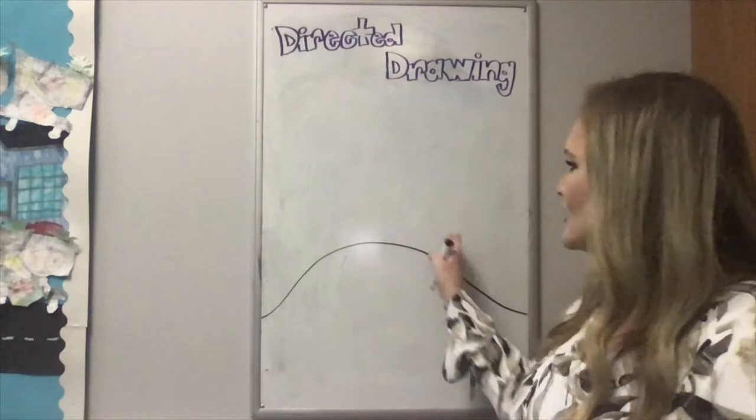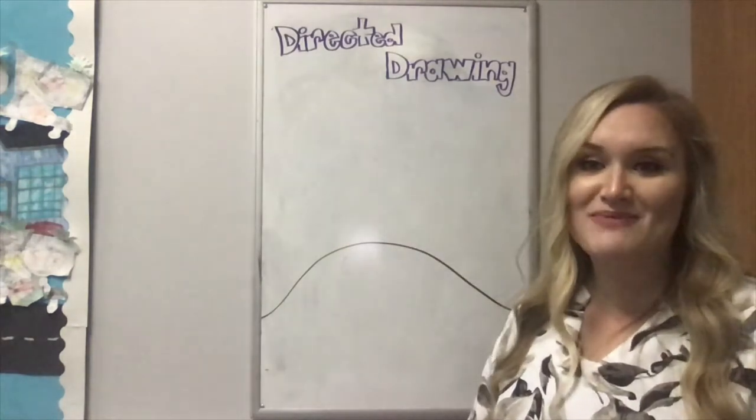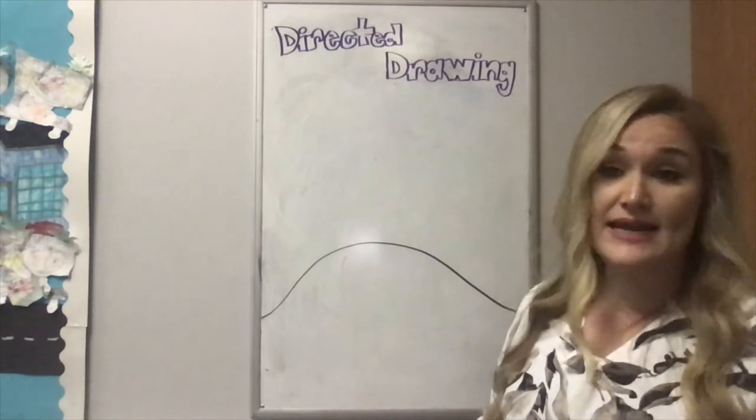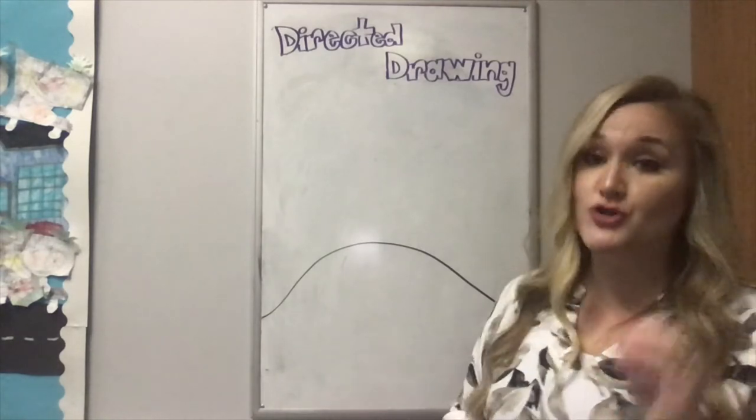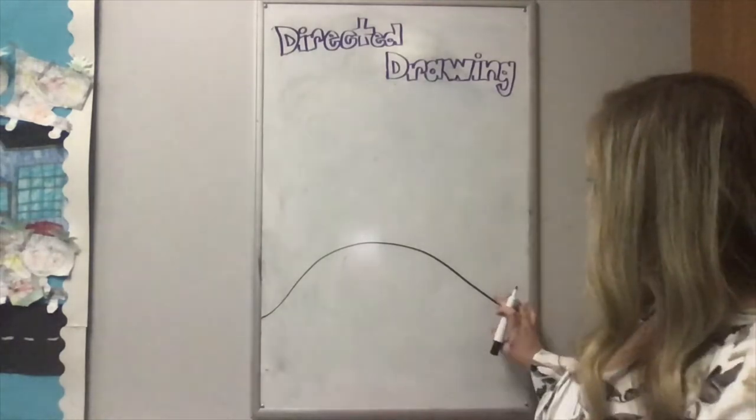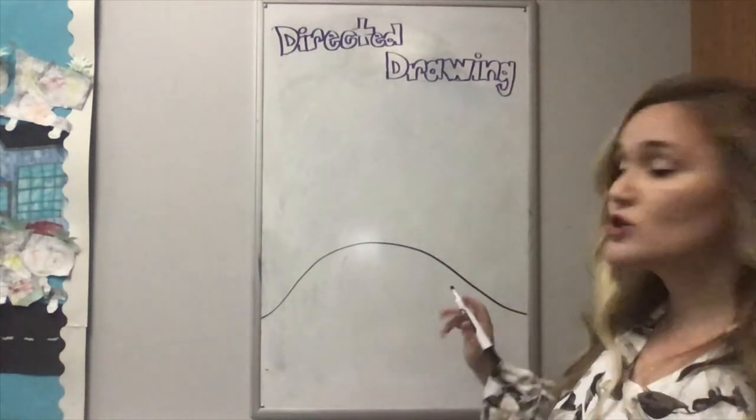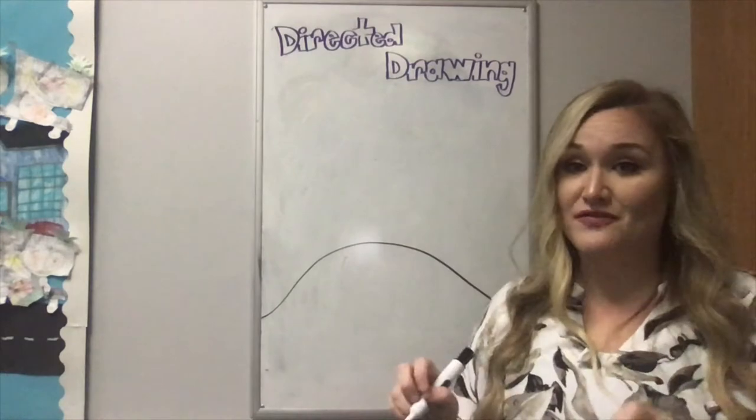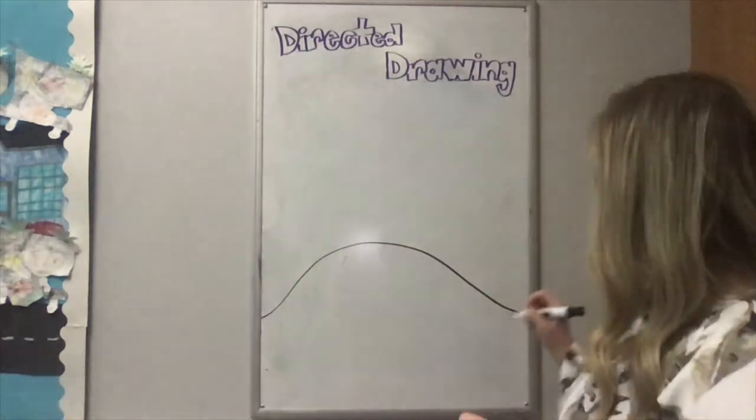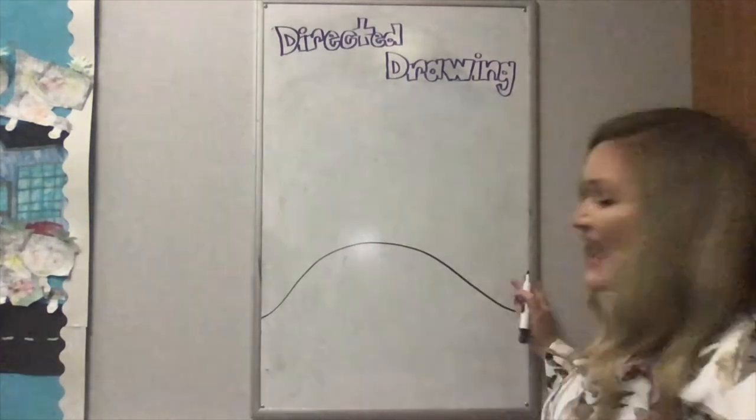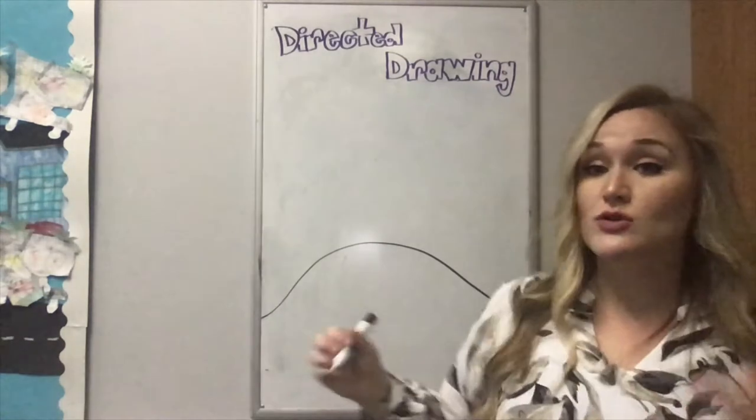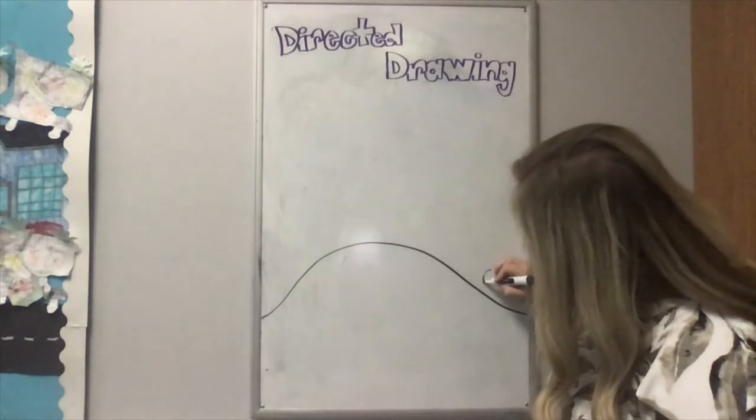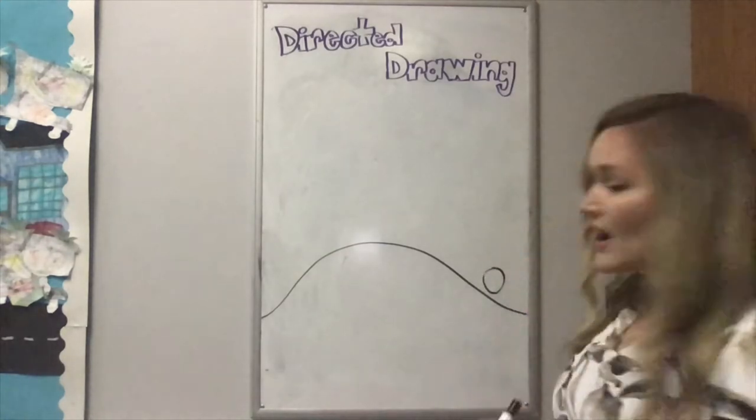Now we're going to draw the caterpillar crawling up the hill, which I thought would be super cute. So, again, simply we're going to draw circles. Now we're not going to draw the circles right on this line. We're going to draw the circles a little bit above it because we have to add the little caterpillar feet on the end. All right, so we're going to start with the caterpillar's tail down here. And you can make the circles as big or as small as you want. So I'm going to do my circle. We have one.